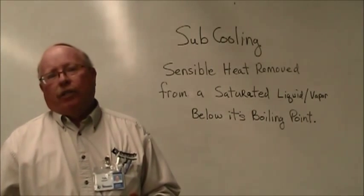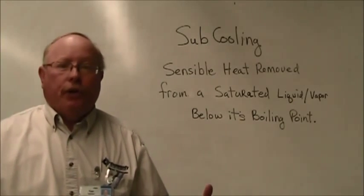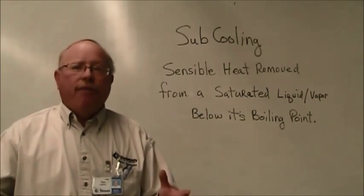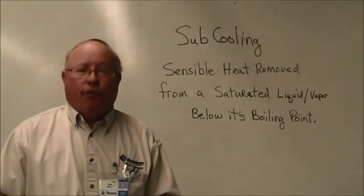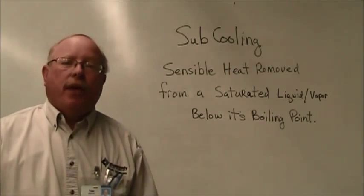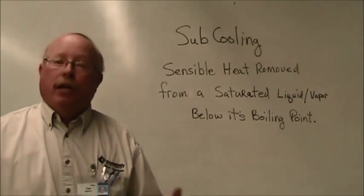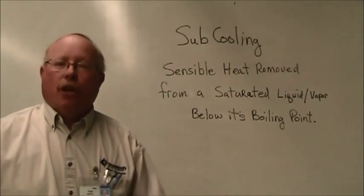If we take, for instance, a refrigerant that has a boiling point of, let's say, 100 degrees, as it moves out of the condenser, if that refrigerant drops further in temperature, such as down to 90 degrees, then we say that it has sub-cooled by 10 degrees or we have 10 degrees of sub-cooling.